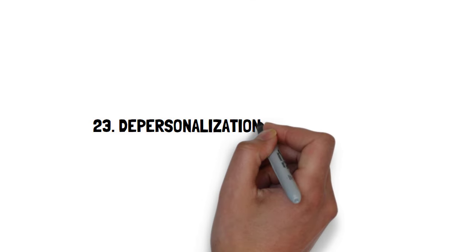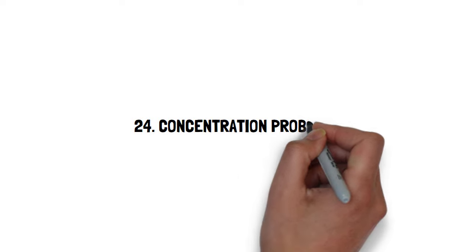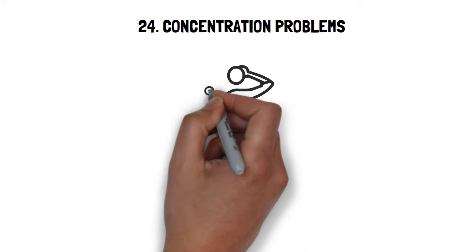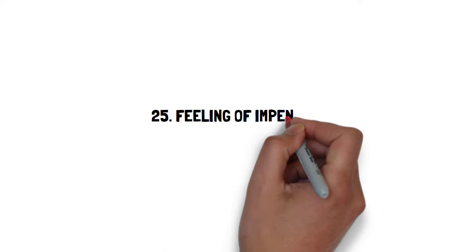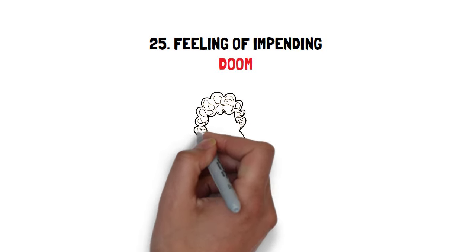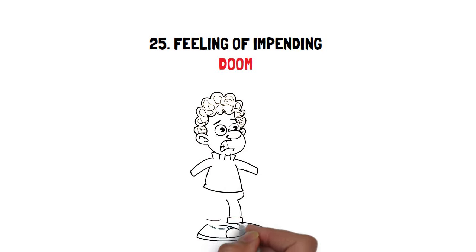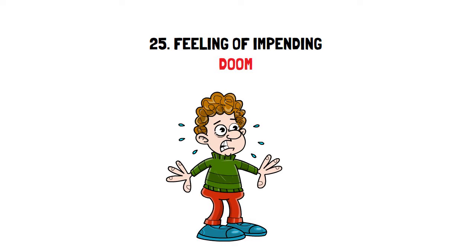Twenty-three, depersonalization and derealization. Twenty-four, concentration problems, difficulties to stick to one task or getting something done or being very forgetful. Twenty-five, feeling of impending doom. Another huge one for me. I kid you not, every little twitch or ache or rash, whatever, that I've noticed was a clear sign of some serious illness and would spiral me into a panic attack.